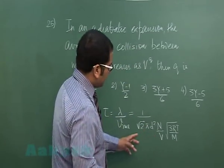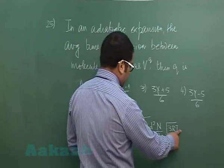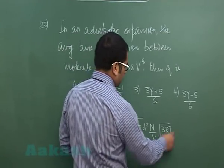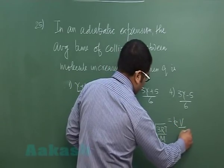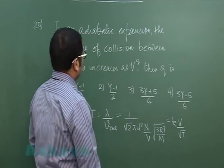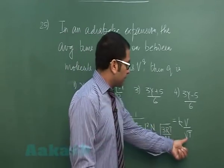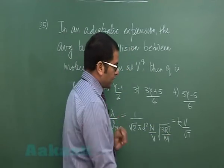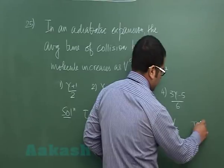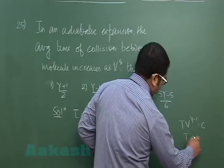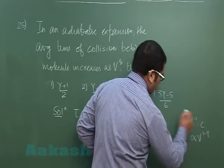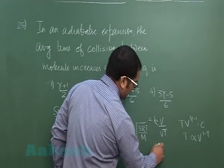Out of all these things, the variables are only the temperature and volume, so this becomes equals to kV by root T. Now I've got to convert temperature in terms of volume, and that's quite an easy process because TV to the gamma minus 1 is constant. So T would be directly proportional to V to the 1 minus gamma.